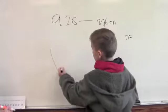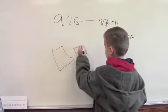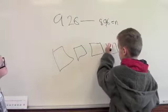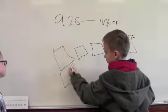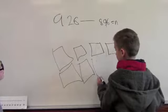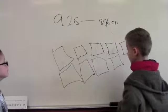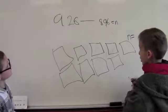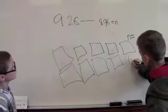We make 9 tenths, then draw 2 tenths and then 6 little ones.